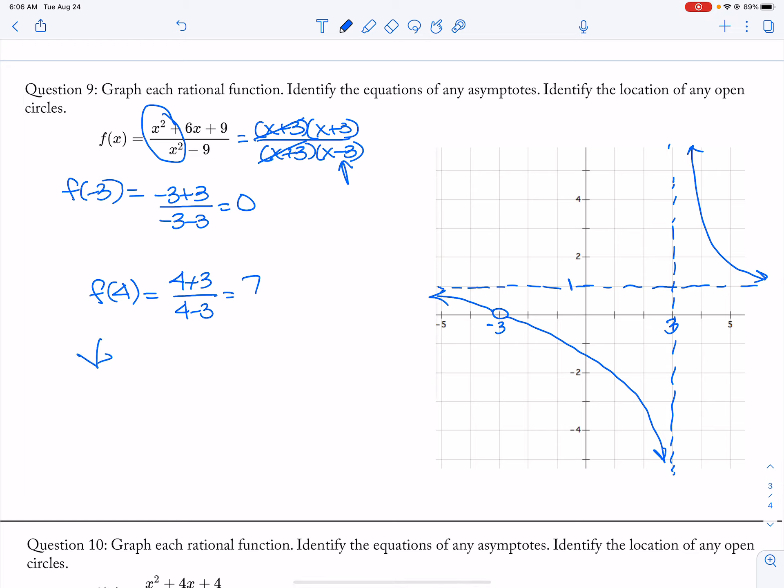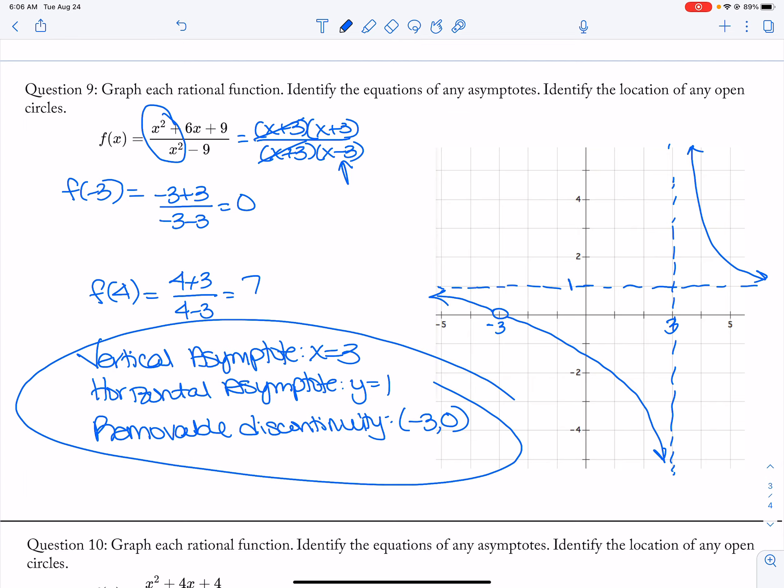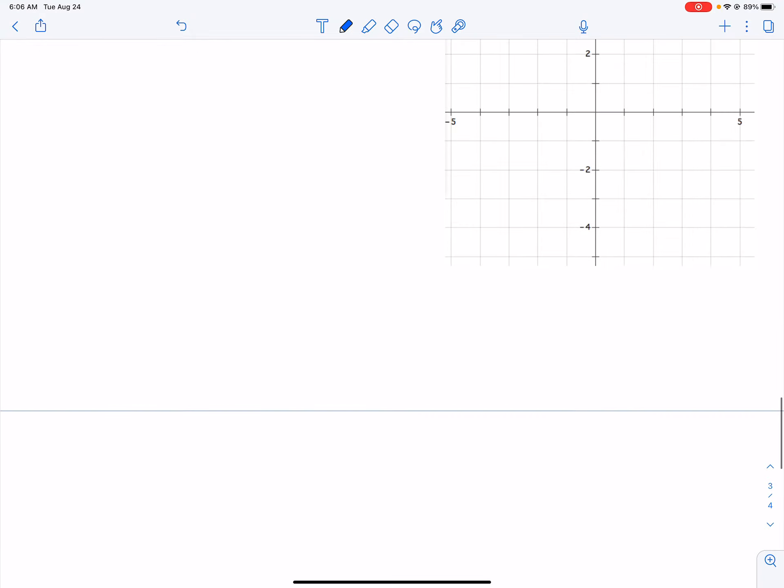So identify the asymptotes. My vertical asymptote is at x is equal to 3. My horizontal asymptote is y is equal to 1. And then my removable or my open circle discontinuity is at the coordinate point, negative 3, 0. Okay. All right. And that is it for this section.